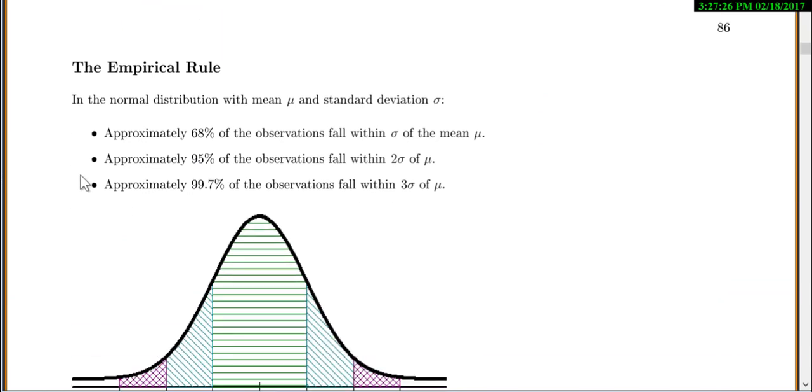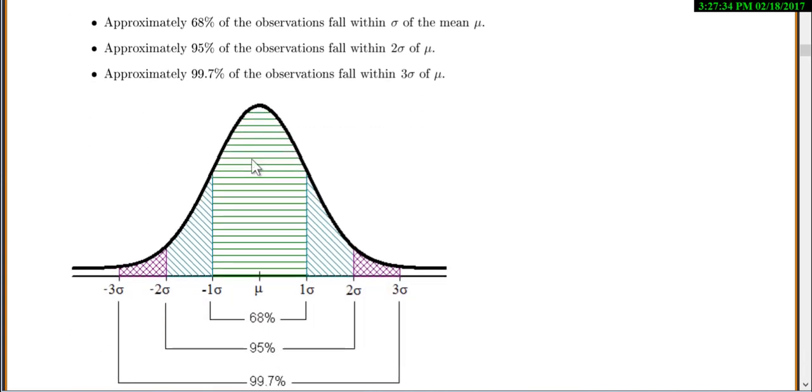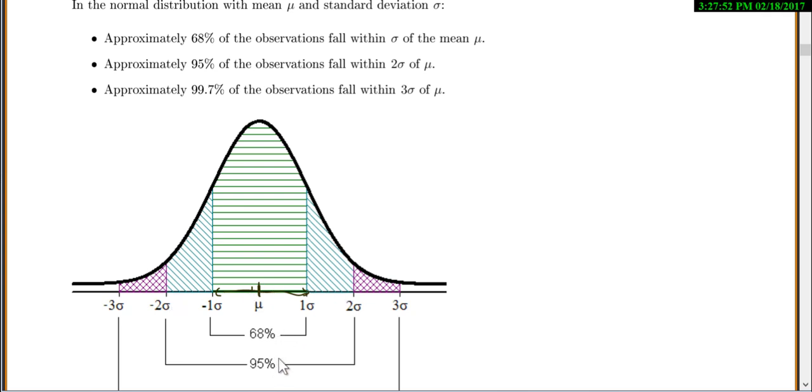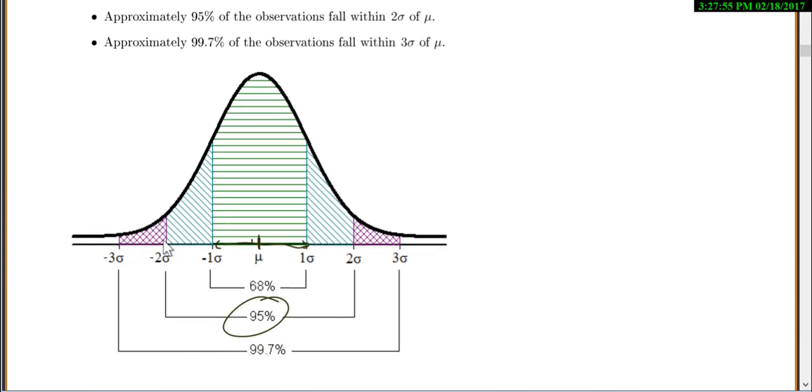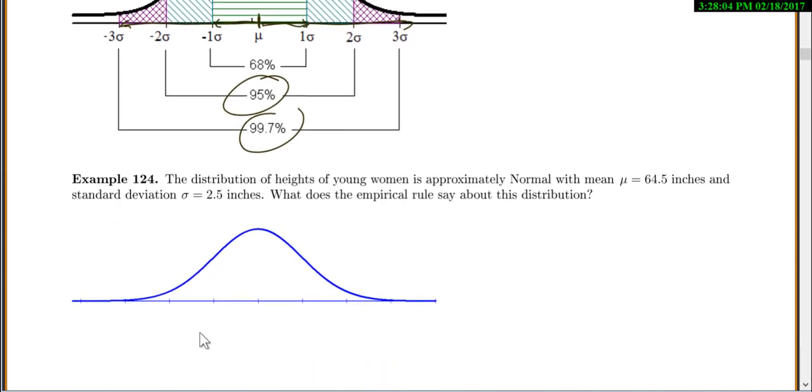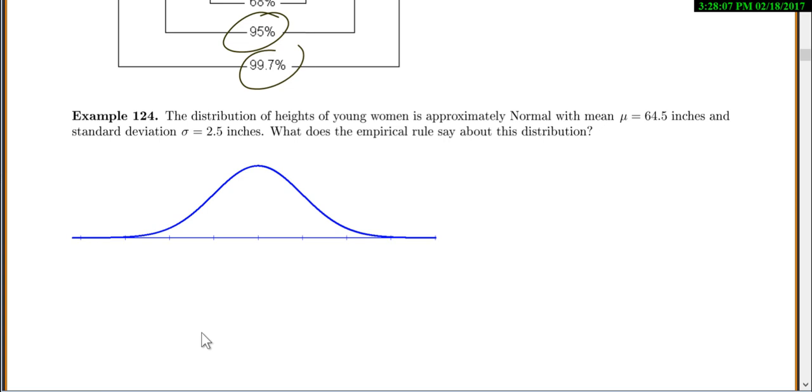The next thing you want to know about the normal distribution is something called the empirical rule. Anytime you have any normal distribution with a mean mu and standard deviation sigma, we know that about 68% of all your observations will fall within one standard deviation of the mean mu. Here's your one standard deviation. You start at your mean mu, and you go out one standard deviation in either direction. That will be about 68% of your curve. If you go out two standard deviations in either direction, you'll be at 95%. And if you go out three standard deviations in either direction, so three this way, three this way, you'll get 99.7%.